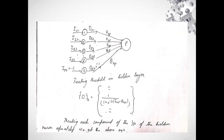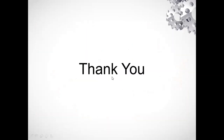Treating the threshold at the hidden layer, we generalize it by saying the output of the hidden layer vector OH equals 1 divided by 1 plus e raised to the power minus lambda times (IHp minus thetaHp). This is the output at the hidden layer. We will be doing the output layer computation in the next session. That's all for today.